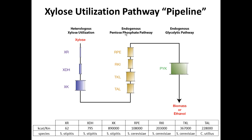We decided to start with a common problem for EBI: xylose utilization. I like to think about metabolic pathways as a pipeline, where each enzyme is a single pipe with a different cross-sectional area representing its catalytic efficiency. Some enzymes are much more rate-limiting than others, so you'd probably want higher expression of those. Though we really don't know much about this enzymology under different growth conditions and strains, so we'd like to do in vivo testing.